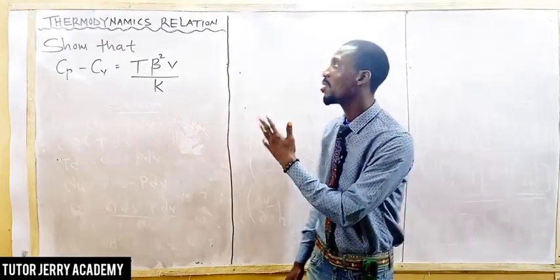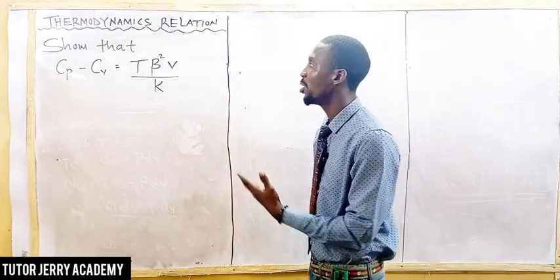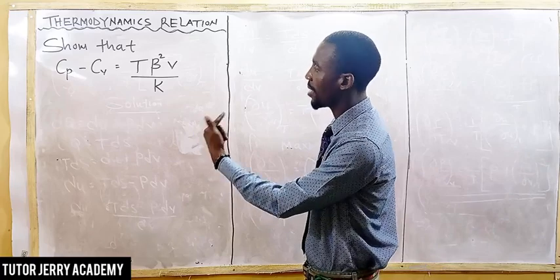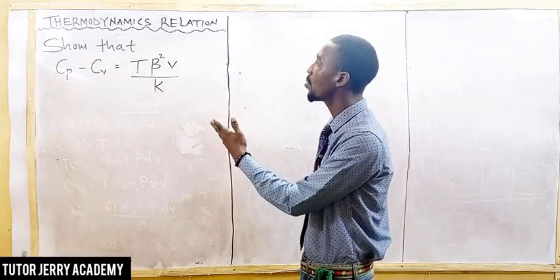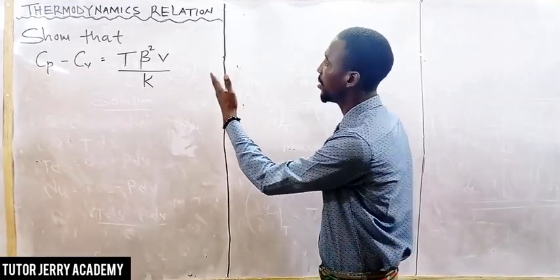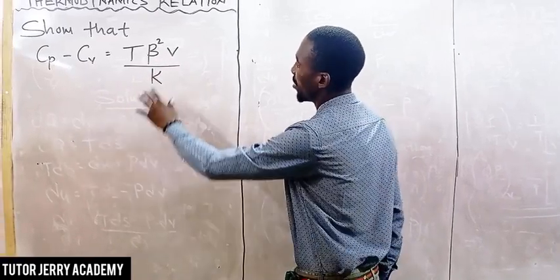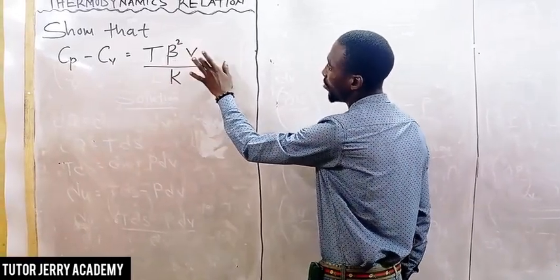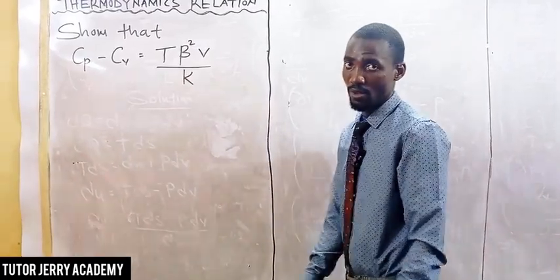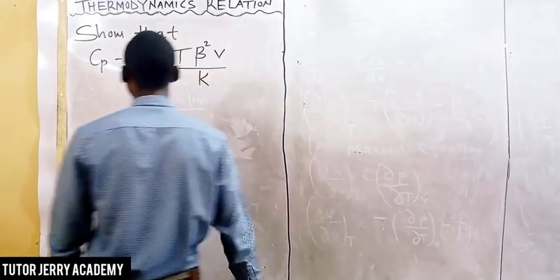We'll be solving the equation above: constant pressure minus constant volume equals the absolute temperature, where this one here is our cubic expansion squared, then volume all over the compressibility factor. We are going to prove this.